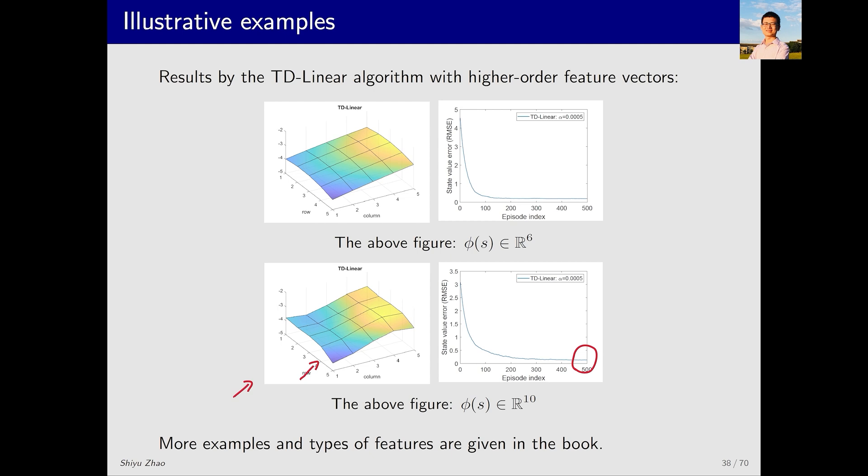However, there is a trade-off, the number of parameters cannot be too many. If there are too many parameters, the value function method eventually becomes no different from the tabular method. More importantly, in the linear case, it doesn't mean that continuously increasing the number of parameters can eventually reduce the final fitting error to zero. Why? Because it's still a linear function. Since the structure of the function is fixed, even if there are a lot of parameters, its fitting ability is still limited by the function's structure. This is also one of the reasons why neural networks are widely used today. Theoretically, neural networks can approximate any nonlinear function. For more explanations of these examples and choices of feature vectors, you can refer to my book.